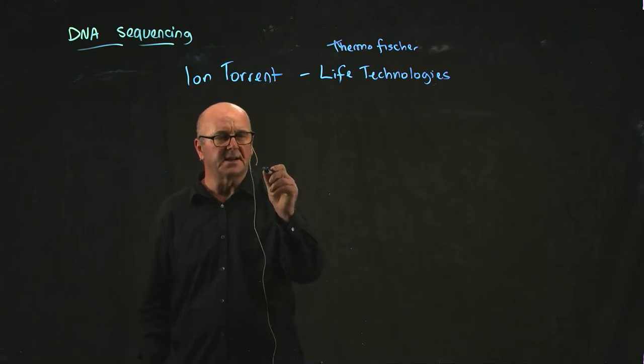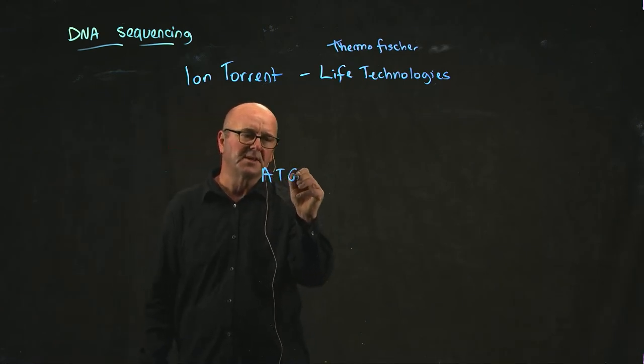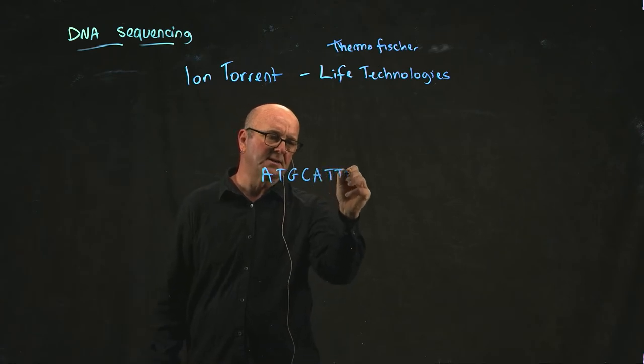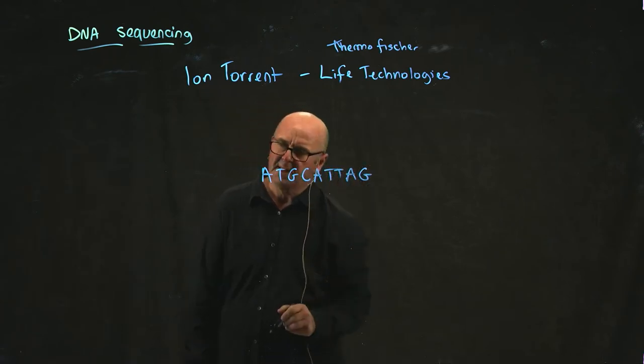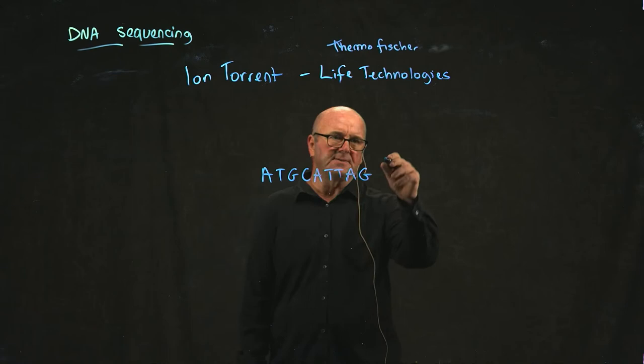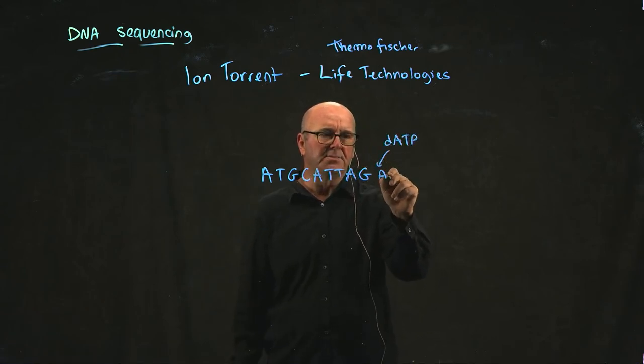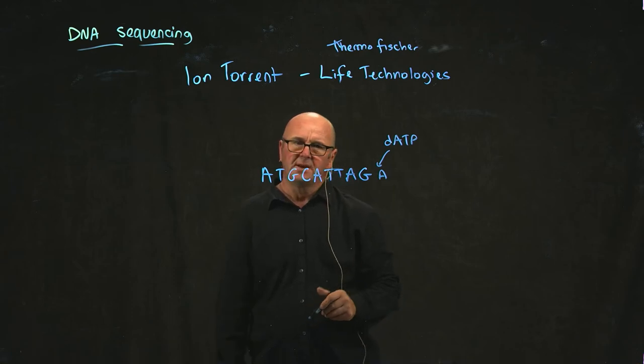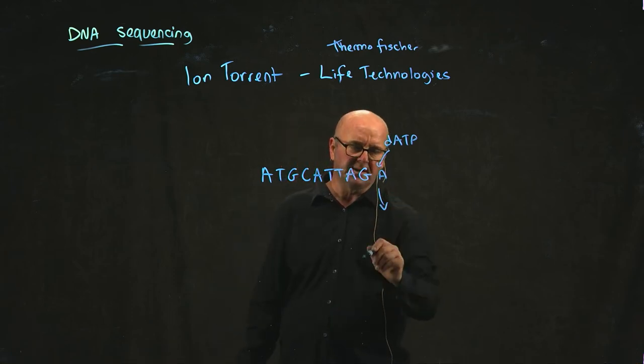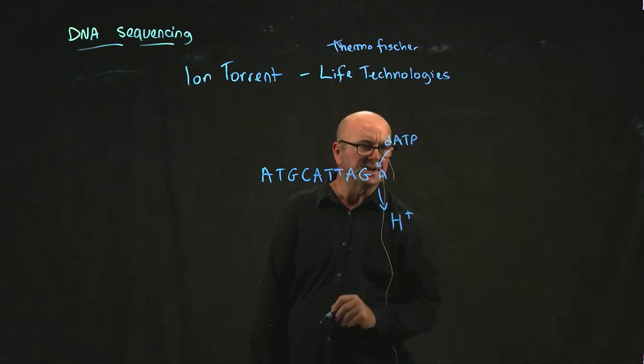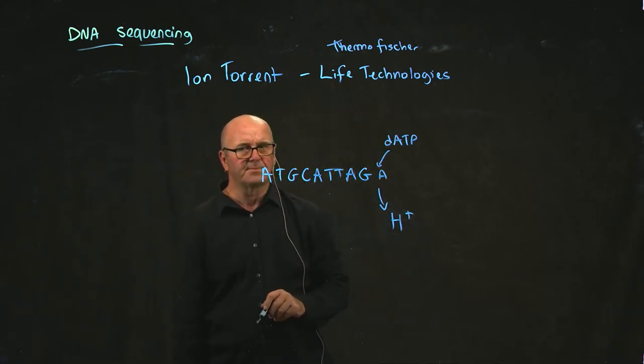Life Technologies' Ion Torrent approach had a slightly different way of detecting the DNA, and it's based off of the same idea. So when you add a new base to the end of the sequence, not only do you get pyrophosphate off, you also get hydrogen ions released.